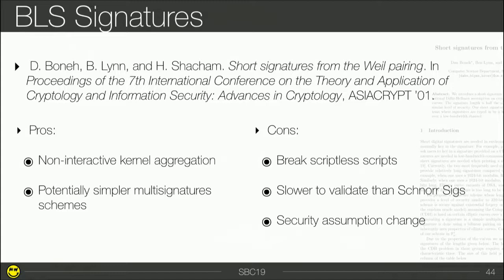Finally, BLS signatures. This type of signature can be really useful for Grin because right now you have all the kernels in the blockchain and you cannot aggregate them. With BLS signatures, we could do non-interactive kernel aggregation, and potentially simpler multi-signature schemes compared to the Schnorr signatures we have right now. There are also cons: it might be slower to validate than Schnorr signatures, and it's a completely different security assumption.